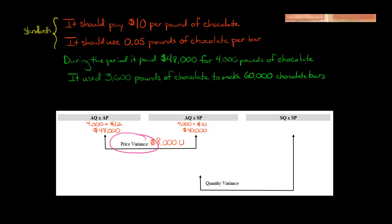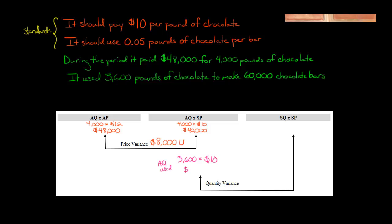Here's the catch: when you calculate the price variance and do AQ times SP, we use the 4,000 pounds times $10. But when we do the quantity variance, we ignore that 4,000. For the quantity variance, the actual quantity used is 3,600 pounds times the standard price of $10 — so that's AQ used, whereas for the price variance it's AQ purchased. Multiplying $10 times 3,600 gives us $36,000 — that's our AQ times SP.